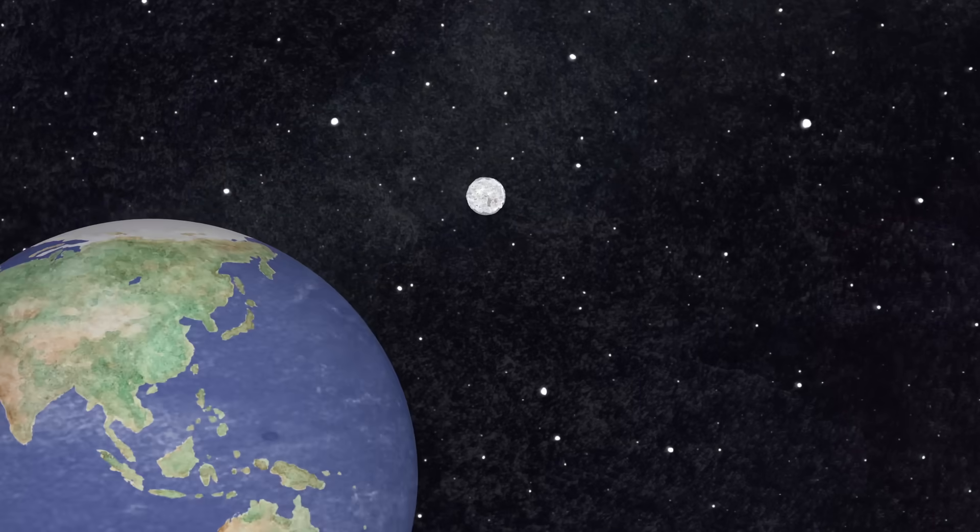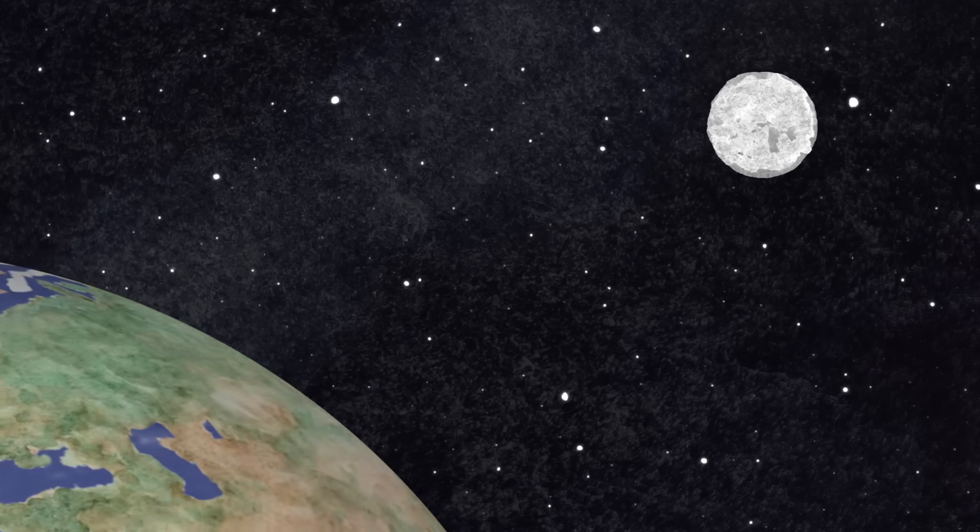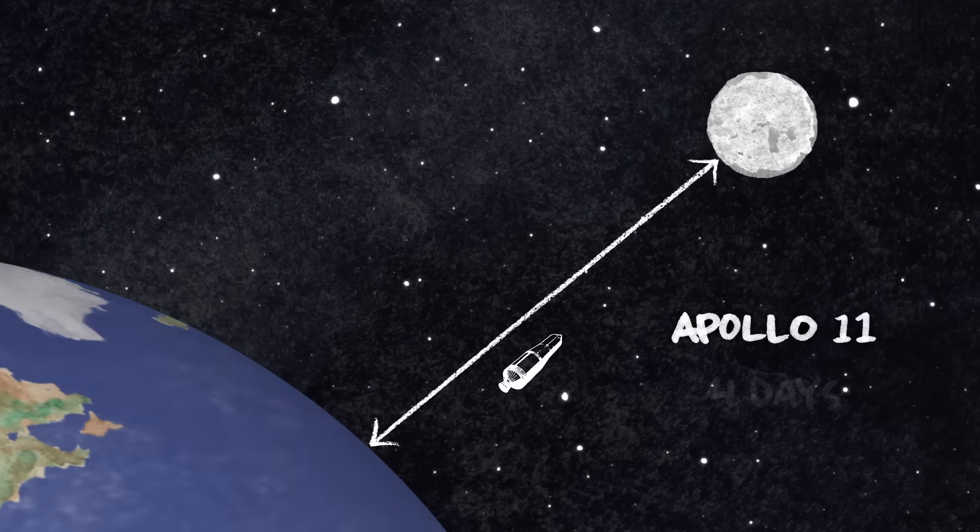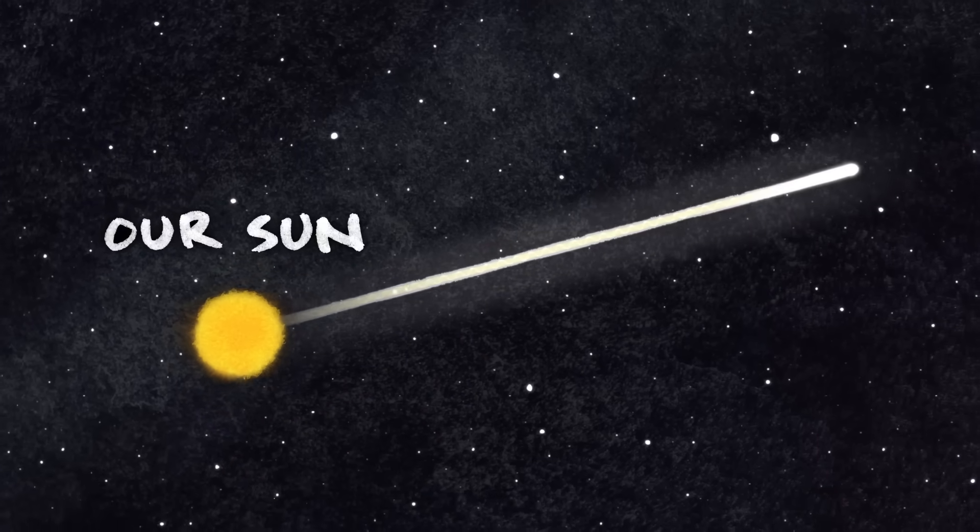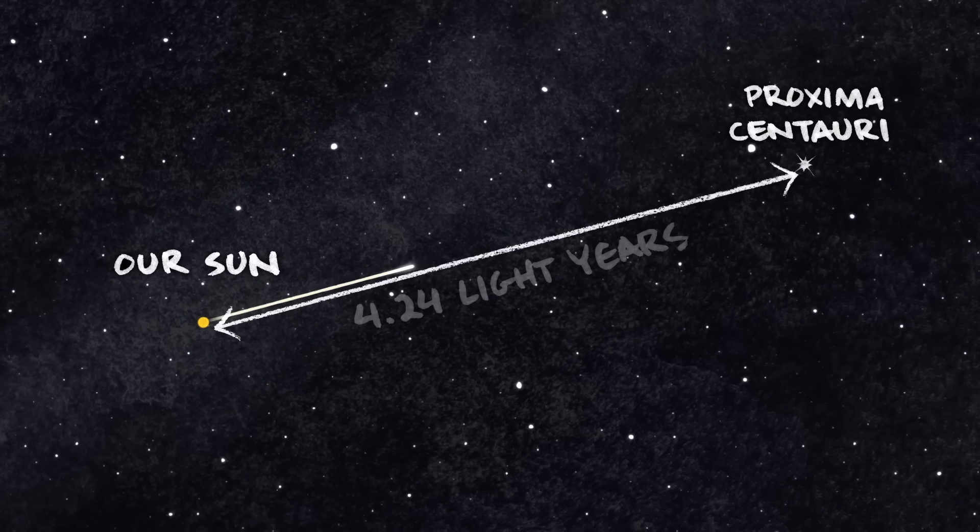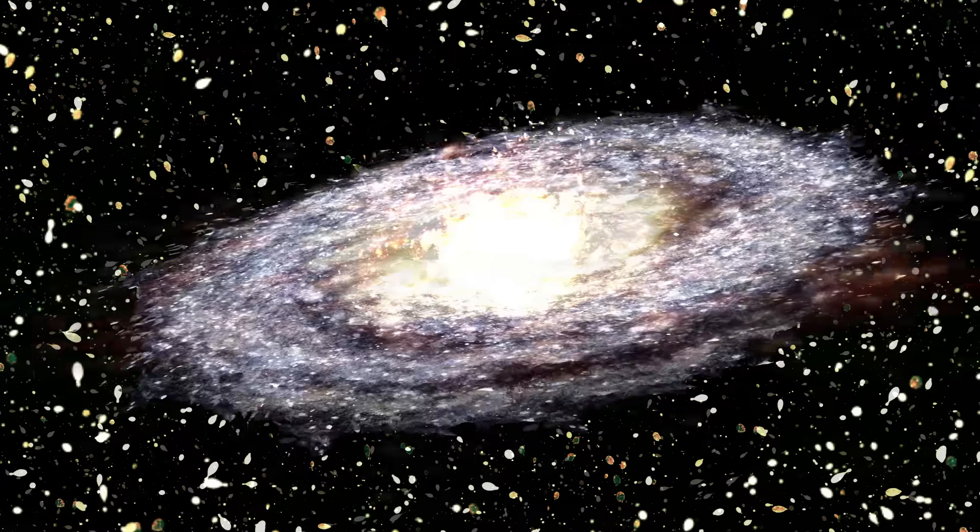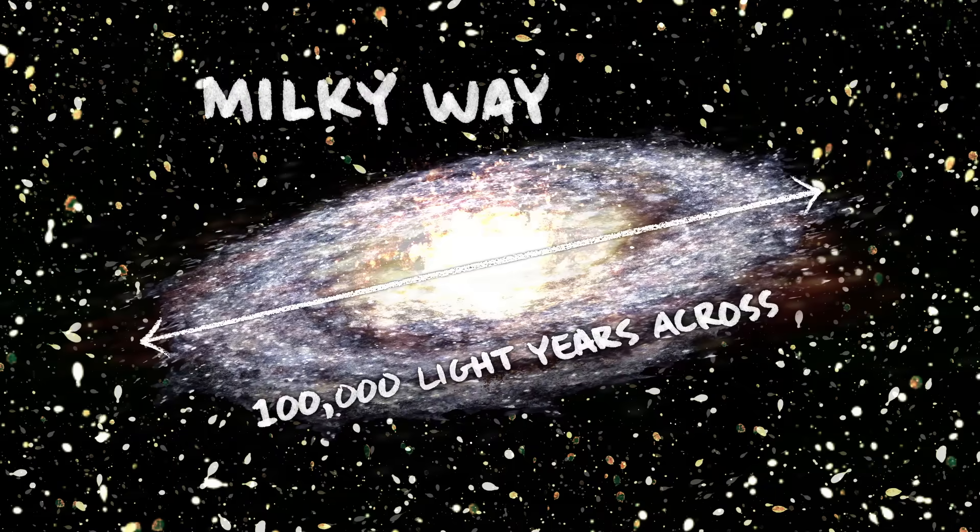To give you an idea of just how far this is, the Moon, which took the Apollo astronauts four days to reach, is only one light second from Earth. Meanwhile, the nearest star beyond our own Sun is Proxima Centauri, 4.24 light years away. Our Milky Way is on the order of 100,000 light years across.